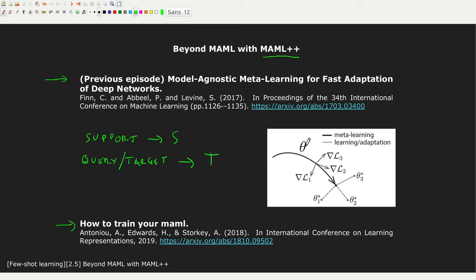Now, what we do in MAML is that we start from a set of weights theta — this is our base network. And then if we have three different tasks, like task 1, task 2, and task 3, then from this base network we want to rapidly move in three different directions, because we want to solve the three different tasks starting from the same initial point.